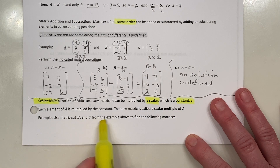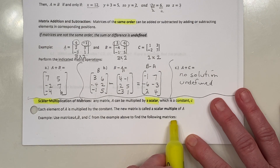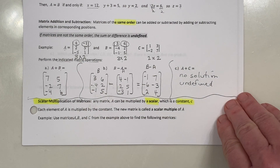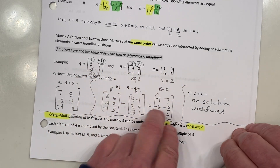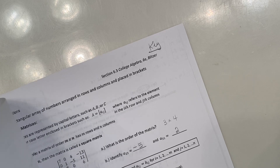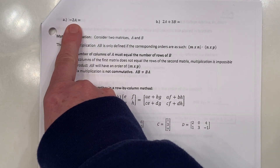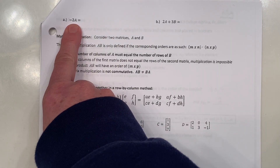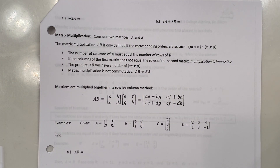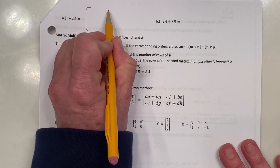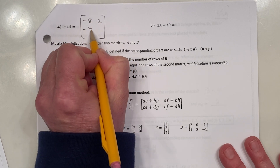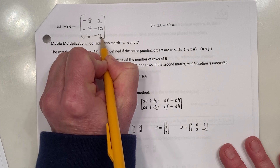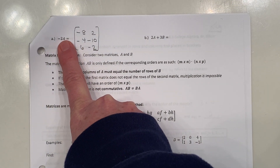Using matrices A, B, and C from the previous example, let's find the following. For negative two times matrix A, that means multiply every element in matrix A by negative two. The resulting numbers come from multiplying each entry of matrix A by negative two.